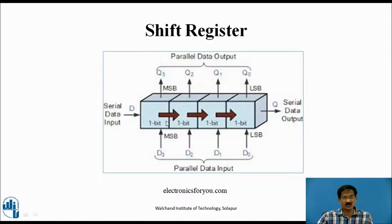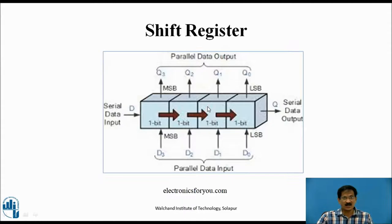This shift register uses four flip-flops, capable of storing 4 bits of information. D is the serial data input and Q is the serial data output. D0, D1, D2, D3 are the parallel data inputs, and the parallel data outputs are Q0, Q1, Q2, Q3. This represents the MSB and LSB. So we can load the data in serial form, retrieve data in serial form, load data in parallel, as well as retrieve data in parallel.